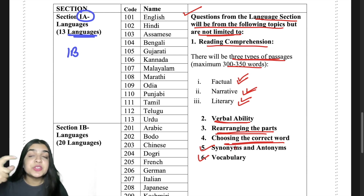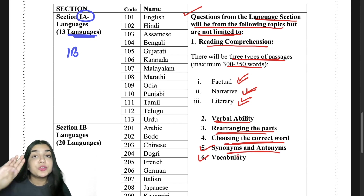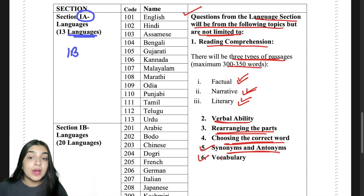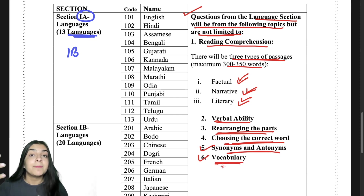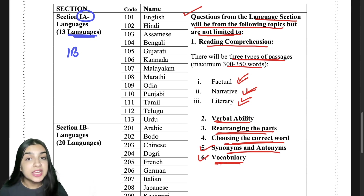Questions on choosing a suitable word to place in a sentence, synonyms and antonyms — finding a word and its completely opposite word — are also part of verbal ability. These are basically new words you add to your vocabulary. Vocabulary consists of difficult or unfamiliar words that you may not know.